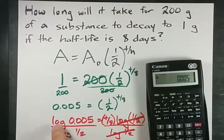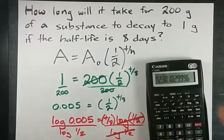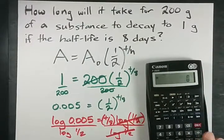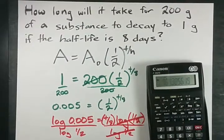Let's not get ahead of ourselves though. Let's log 0.005 and divide it by the log of 0.5. I get 7.64.